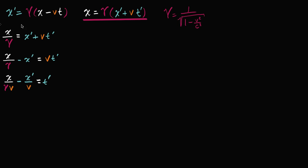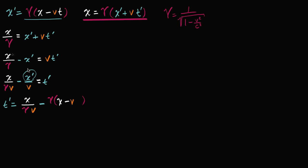So if we take this and substitute it in for x prime — let me swap sides too — we are going to get t prime is equal to x over gamma over gamma times v, minus gamma times (x minus vt), and all of that over v. So we just replaced x prime with that expression.